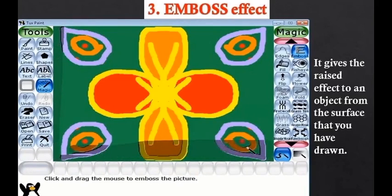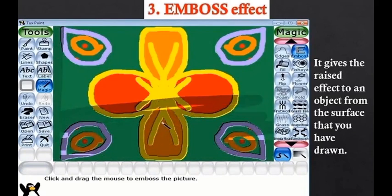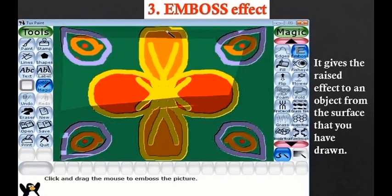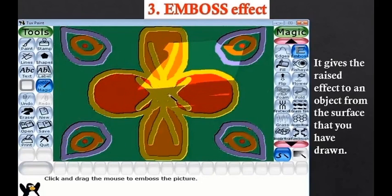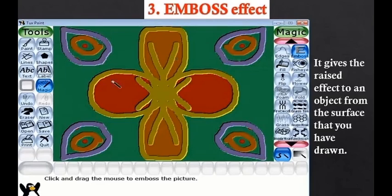Just select the emboss effect and start dragging the wand in the drawing area, and it will do the rest. That's how this emboss effect tool works - it will give a raised effect to your drawing.